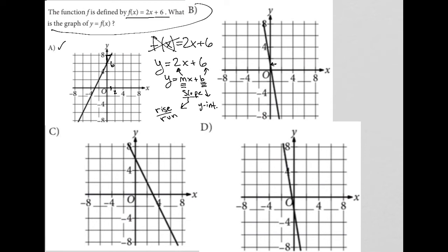Choice B has a y-intercept somewhere here at positive 1, so that's gone. Choice C also has a y-intercept at 6, but it's going up and left, going up 2 and left once, so that's not the right answer.